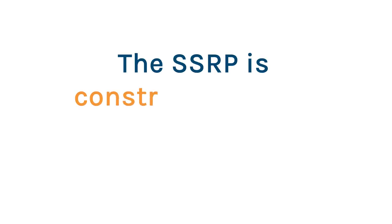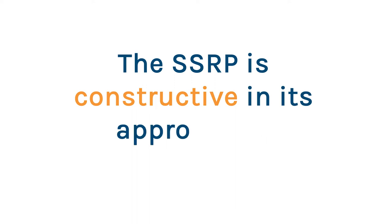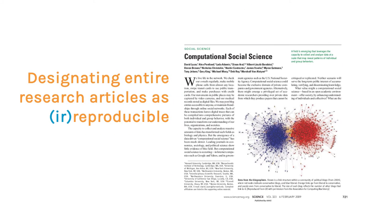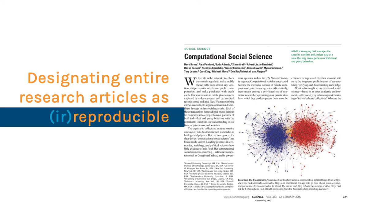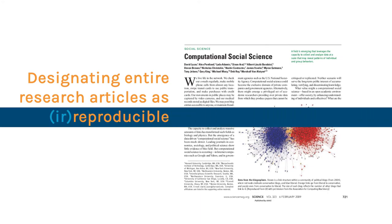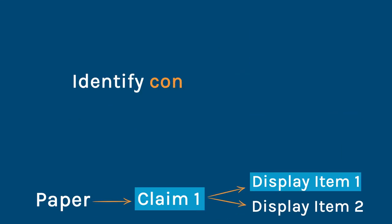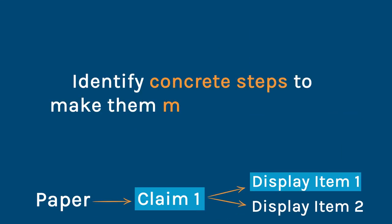The SSRP is constructive in its approach to reproducibility. Rather than designating entire research articles as irreproducible, SSRP reproductions focus on specific research claims and their associated display items, like figures and tables, and identify concrete steps to make them more reproducible.